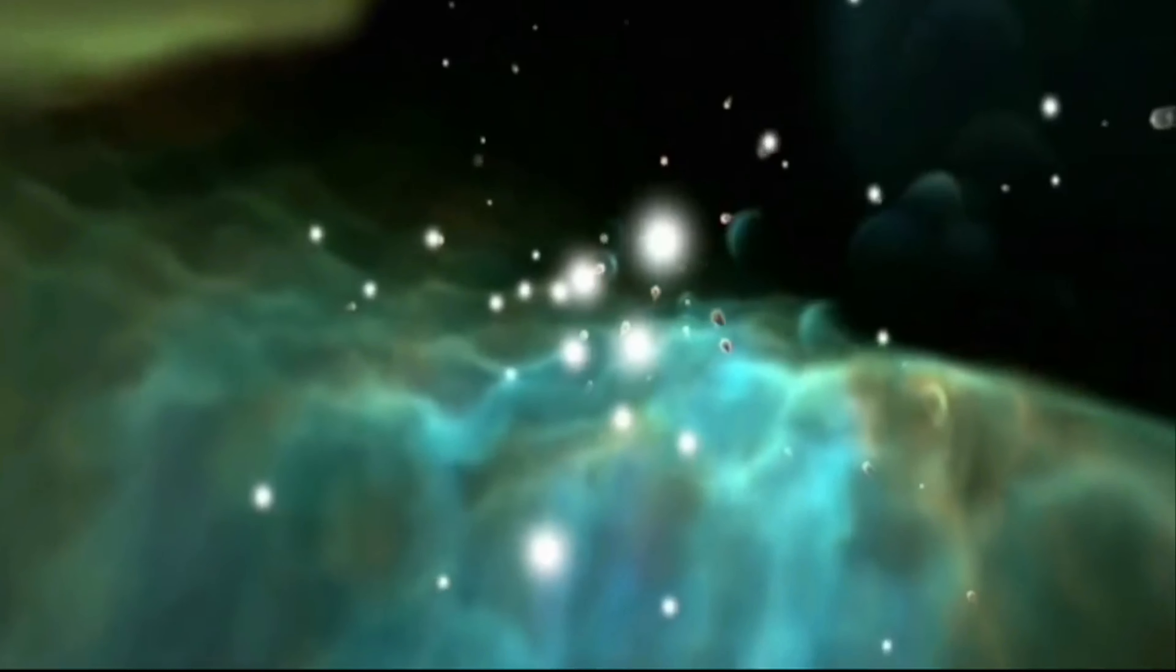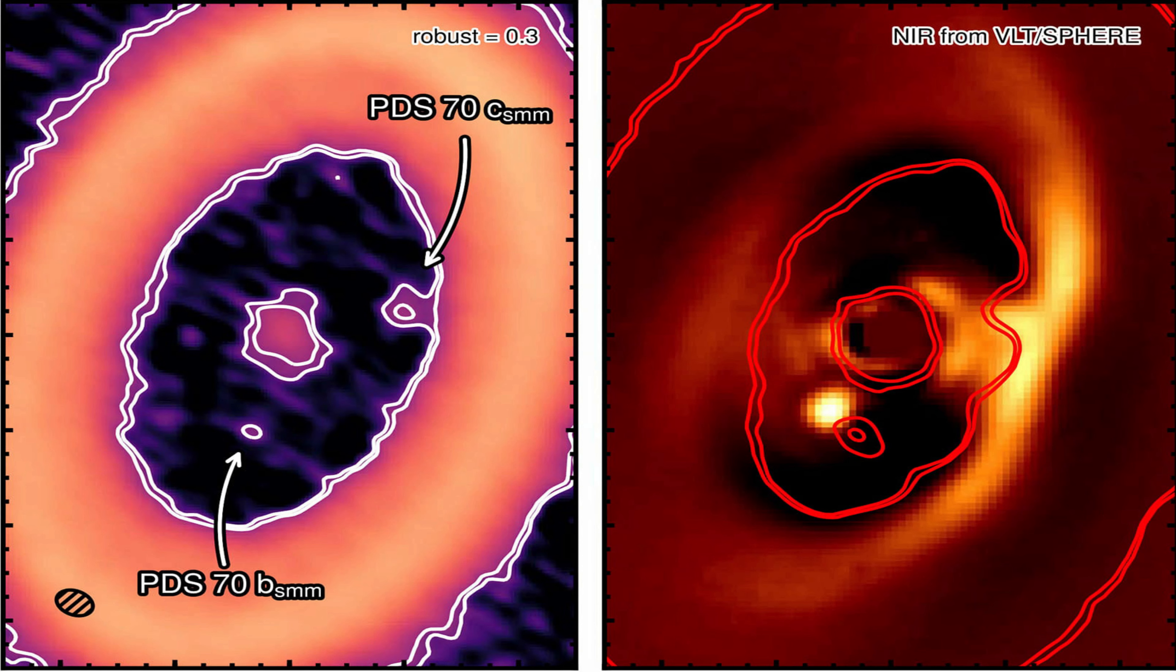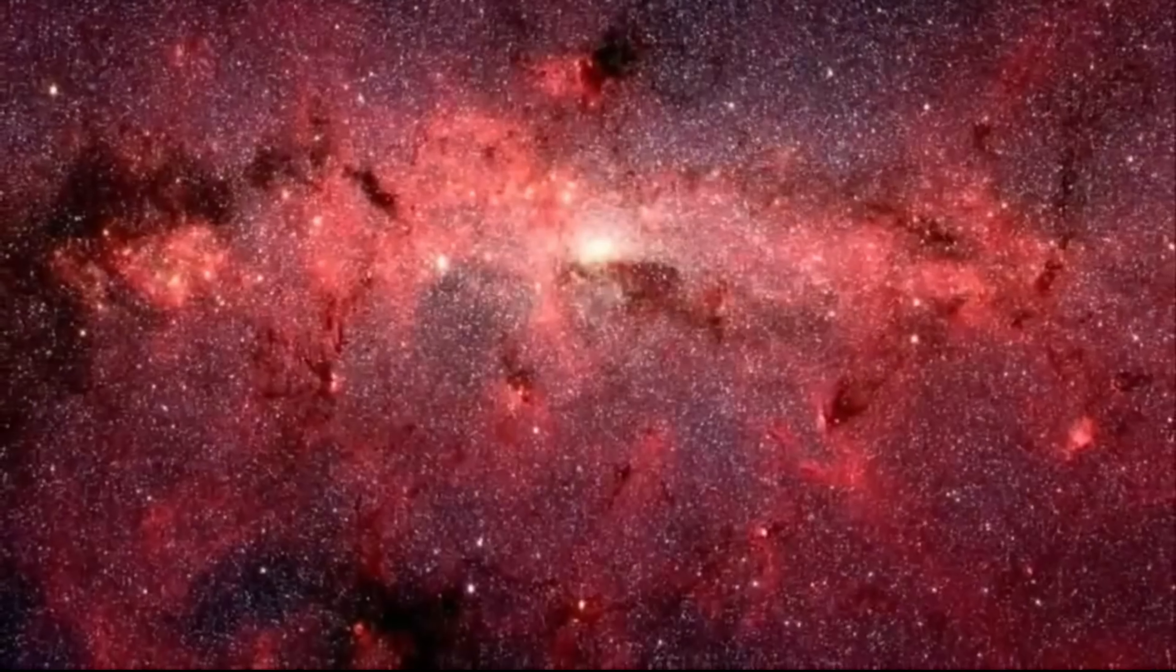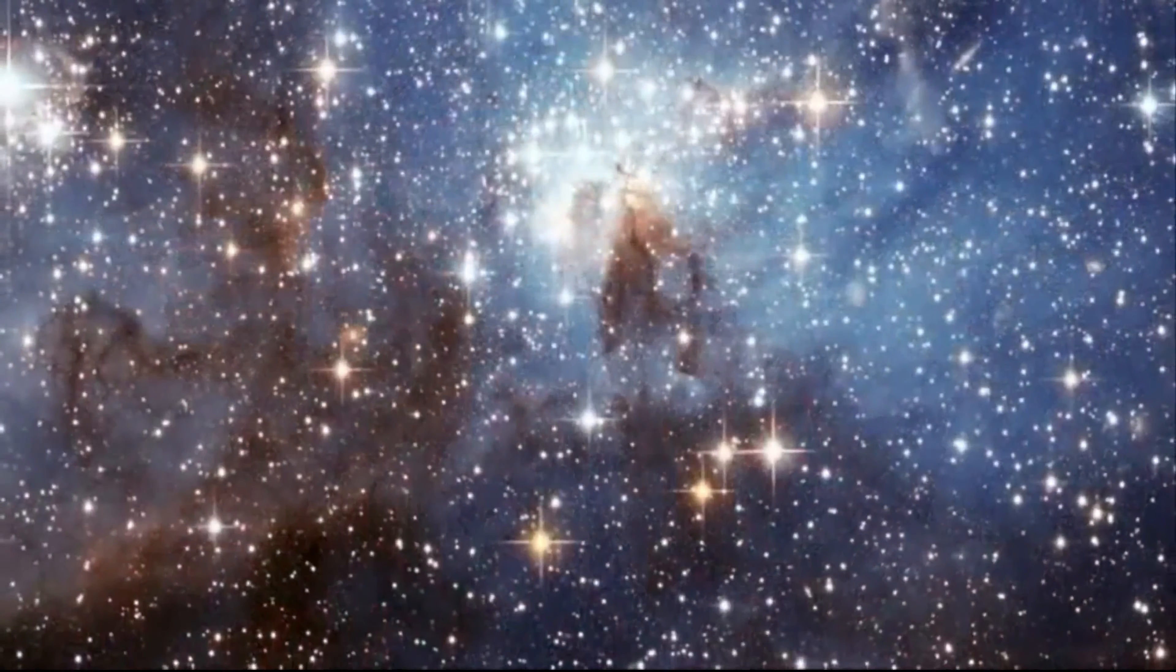This huge exoplanet, designated PDS-70b, orbits the orange dwarf star PDS-70, which is already known to have two actively forming planets inside a huge disk of dust and gas encircling the star. The system is located 370 light-years from Earth in the constellation Centaurus.